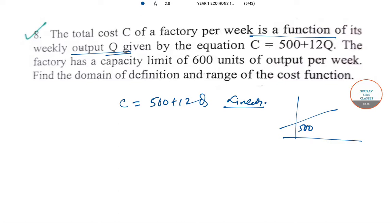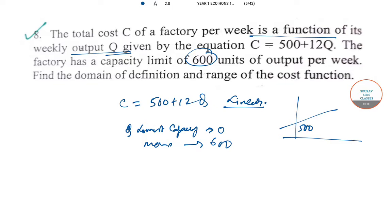The factory has a capacity limit of 600. The lowest capacity must be 0, so Q ranges from 0 to 600. Remember that if Y = MX + C is the function, then the lowest and highest value of X gives the domain.